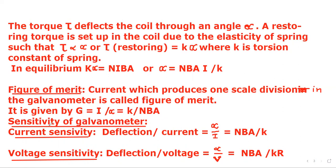Now we define sensitivity of galvanometer. Current sensitivity is defined as deflection per unit current, that is alpha divided by I. So if we find alpha upon I from here, we get NBA upon k.